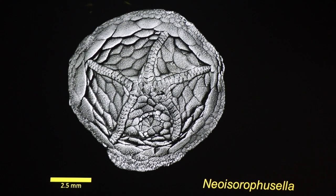This same arrangement can be seen in other echinoderms, such as this neo-isorofusela. The shared ambulacra are positioned over the mouth, the A-ambulacrum comes out, and then the two side ambulacra split.